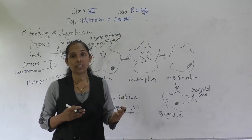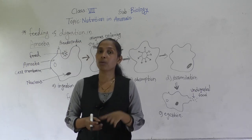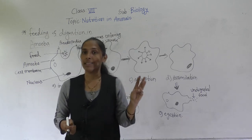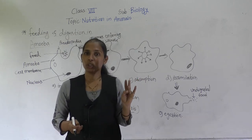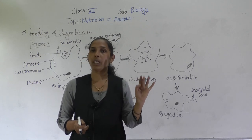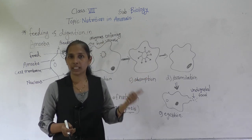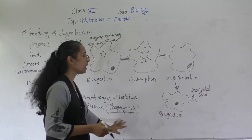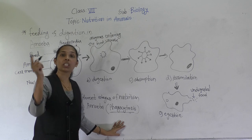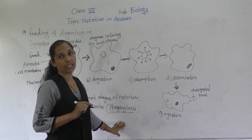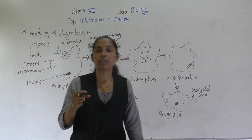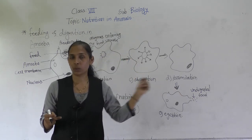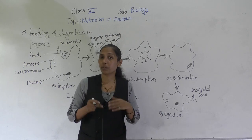As we know from the human digestive system, we have discussed five processes which happen in digestion: ingestion, digestion, absorption, assimilation, and egestion. All these five processes also happen in amoeba, which is a unicellular organism, and are carried out by only that single cell.